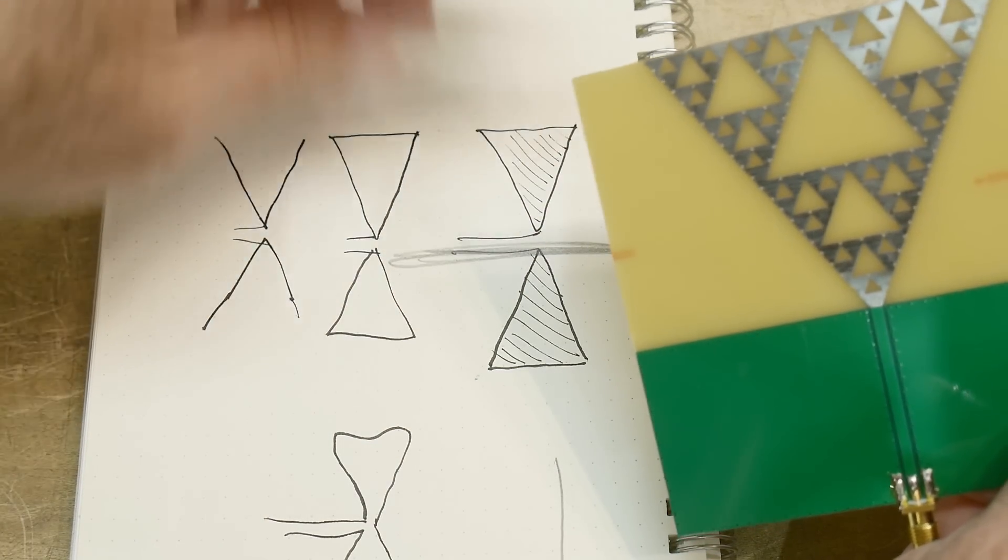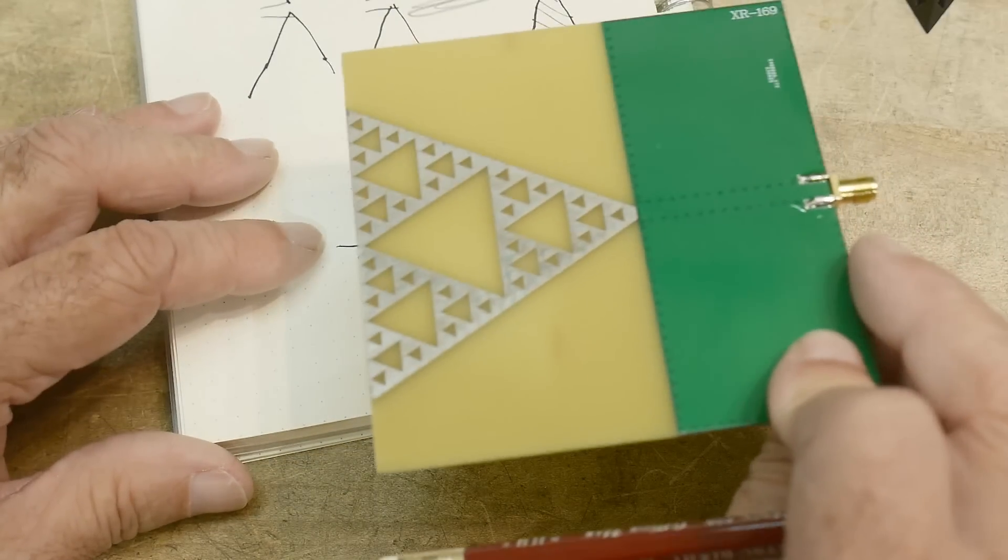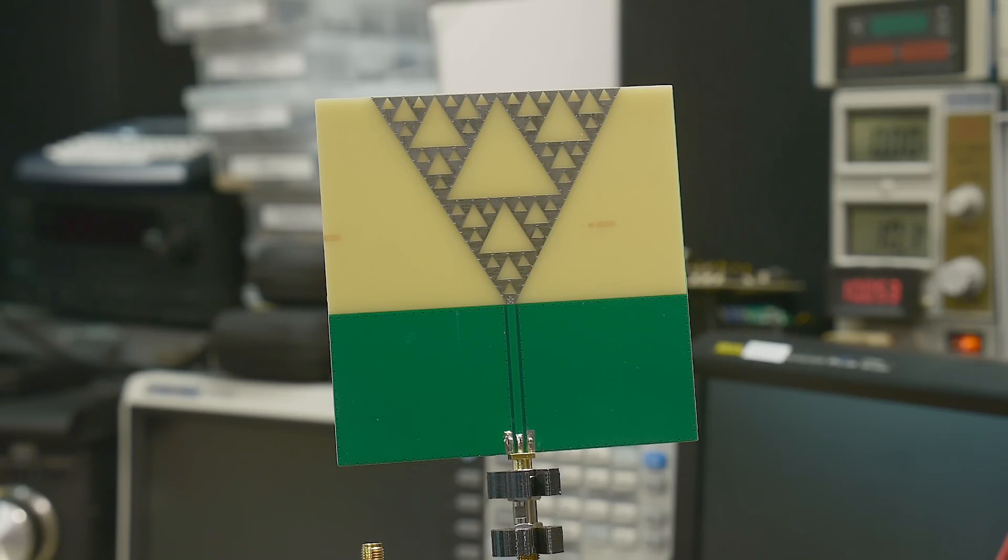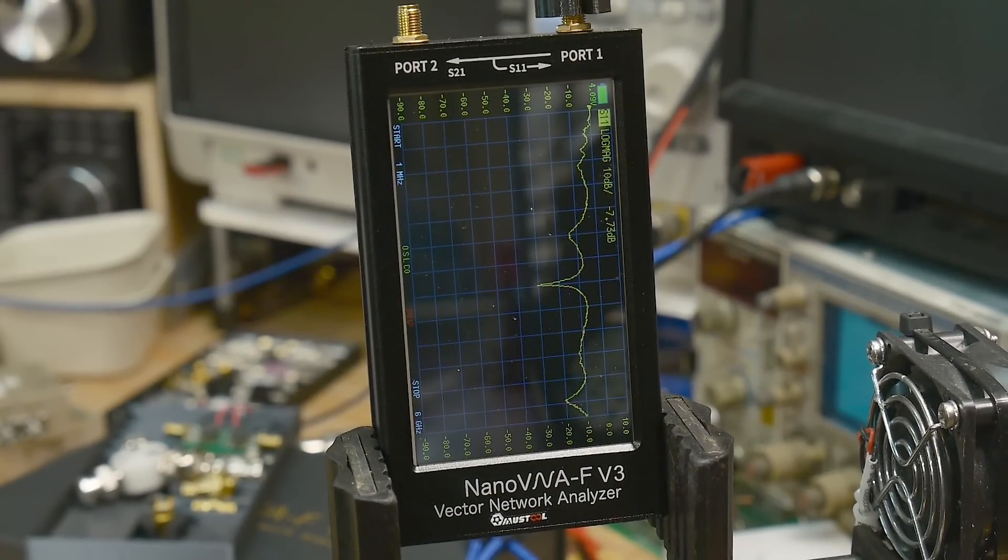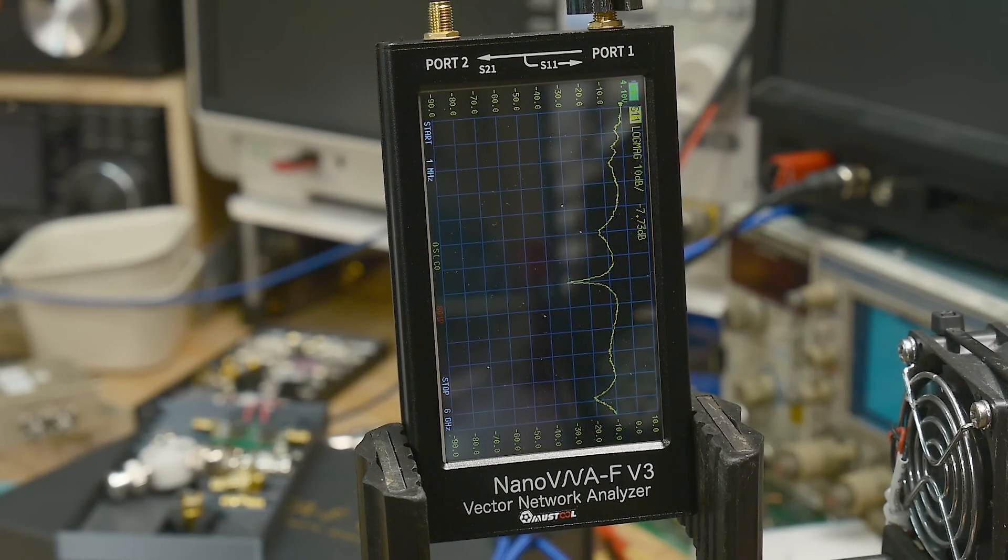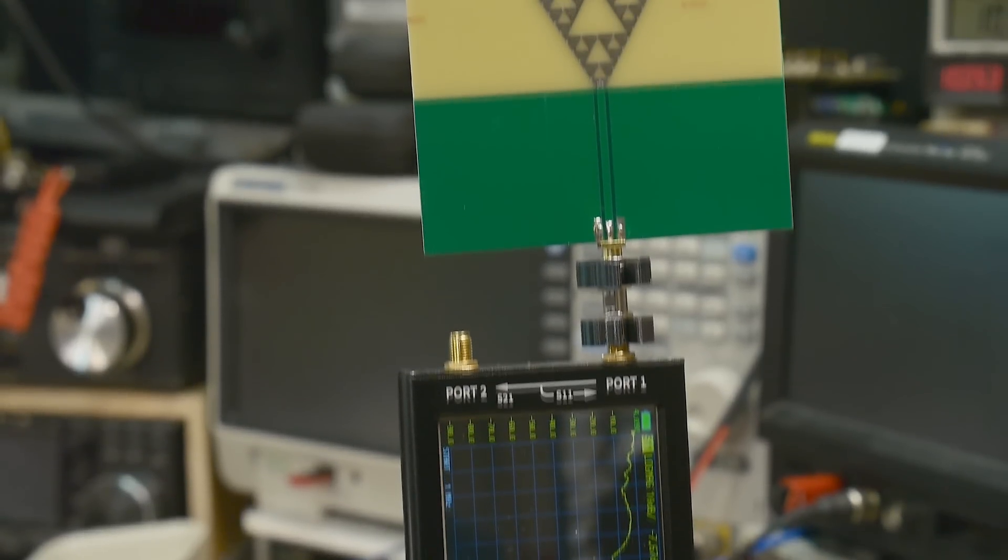So let's put this on a VNA. All right, I've calibrated the VNA and hooked it up. So here is the antenna and it is connected to the VNA. There you go, we get some dips, one better than the other. So we'll take a closer look at these. I've taken some pictures of the screen but this is my test setup.